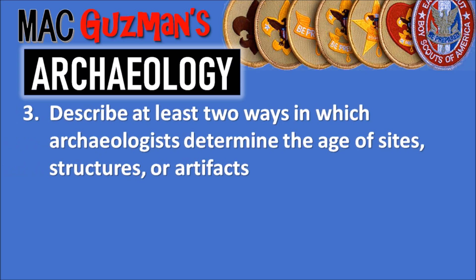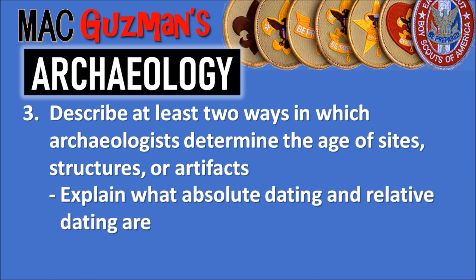Requirement number three says to describe at least two ways archaeologists determine the age of sites, structures, or artifacts, and to explain what absolute dating and relative dating are. The two ways are absolute dating and relative dating. Absolute dating has to do with radioactivity and carbon dating. Relative dating is when they look at the layers in which artifacts were found and determine the age based on how deep they were in the ground — finding their relative dates based on the level at which they were found.